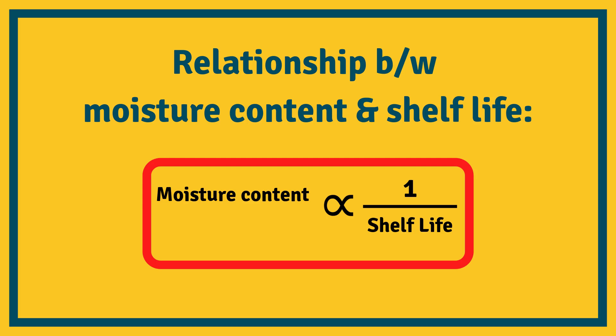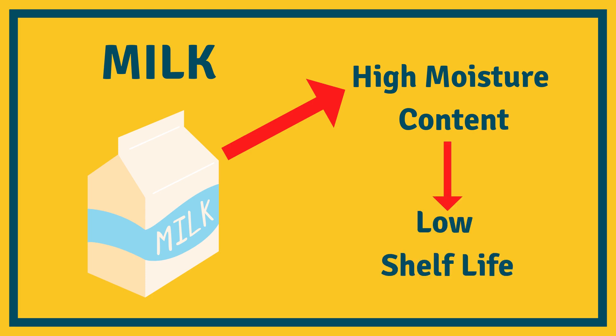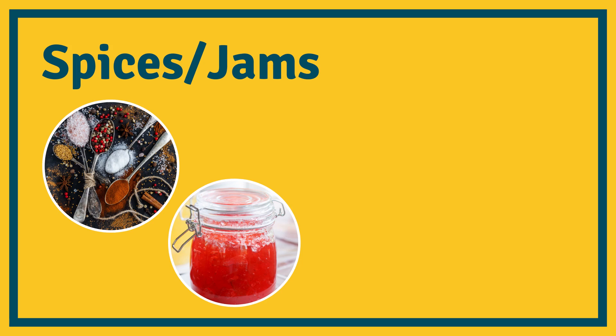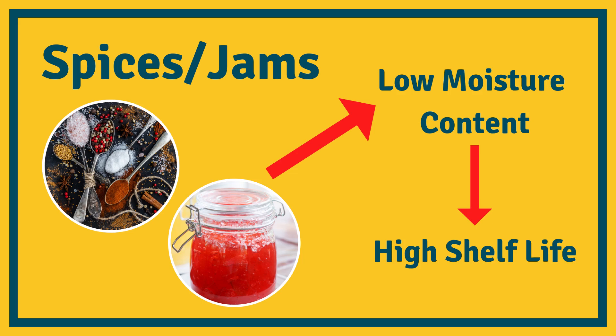Let us take an example and understand this relationship more clearly. For example, if we take milk — all of us know that milk has a higher amount of moisture, about 90 percent water content — and obviously milk has a very small, very low shelf life. But if we take the example of spices or jam, the amount of moisture content is comparatively very very less, and that is why they have a higher shelf life.